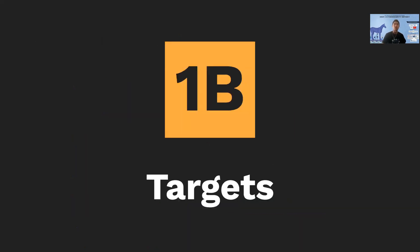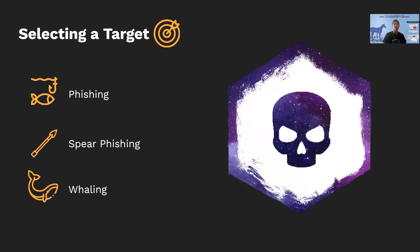Now we're going to go more into target selection. Phishing is a broad term — there are types like smishing, which is text message phishing, and vishing, which is voice or phone phishing. When selecting a target, there's spear phishing, targeting a specific branch or company prioritizing quality over quantity, and whaling, targeting CEOs and higher-ups with large amounts of resources. For this engagement, we're doing a spear phishing engagement.